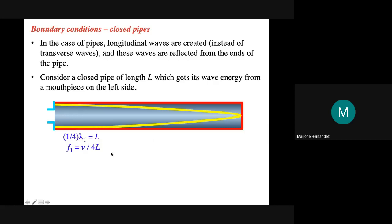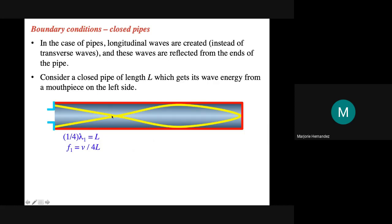For the second harmonic of the closed pipe, we add nodes and antinodes, but still one side must be a node and one side an antinode. Drawing that shape, we now have two nodes and two antinodes. The length will be three-fourths of a wavelength. Plugging that into the wave speed equation, the second harmonic frequency is 3V over 4L.